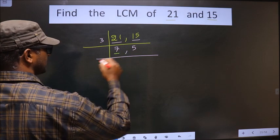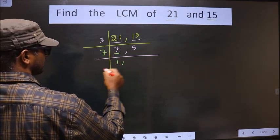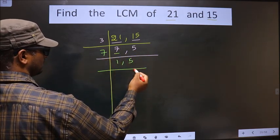Now here we have 7. 7 is a prime number. So we take 7 once 7. 5 is not divisible by 7. So 5 as it is, you write it down.